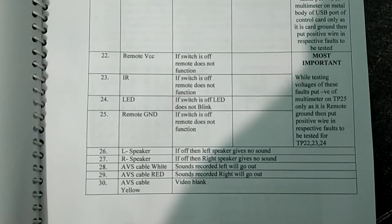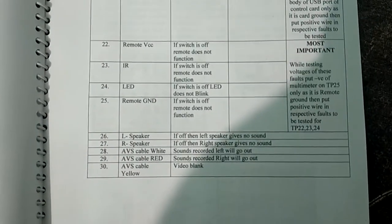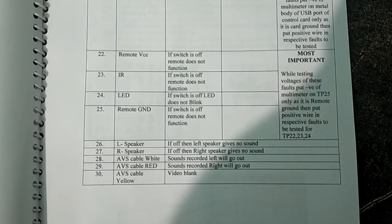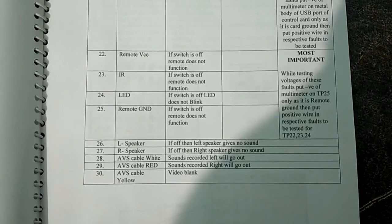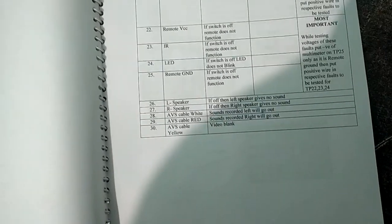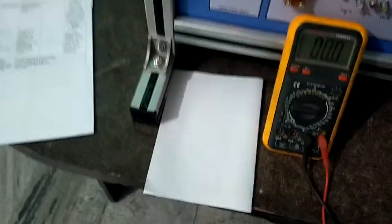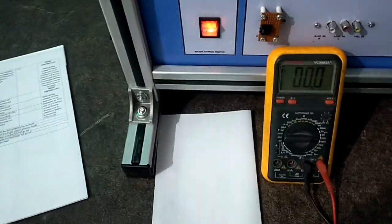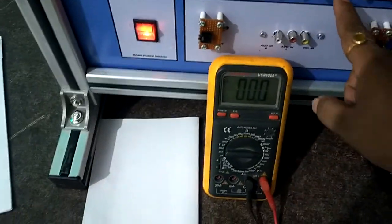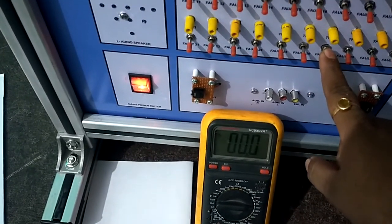Switch number 22 to 25 are connected to the remote IR section. If we switch off any button from 22 to 25, the remote functions will not work. And next to that, switch number 26 and 27 are for speaker.